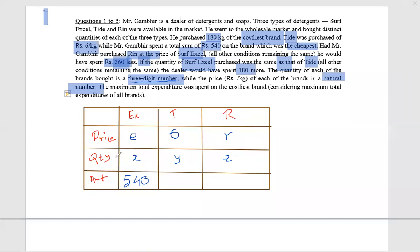Initially, the total costing was ex plus 6y plus rz. Let's call it A. Then there are some changes: 6y remains 6y, but ex becomes ez and rz becomes rx. Then the amount will come down by 360 rupees.